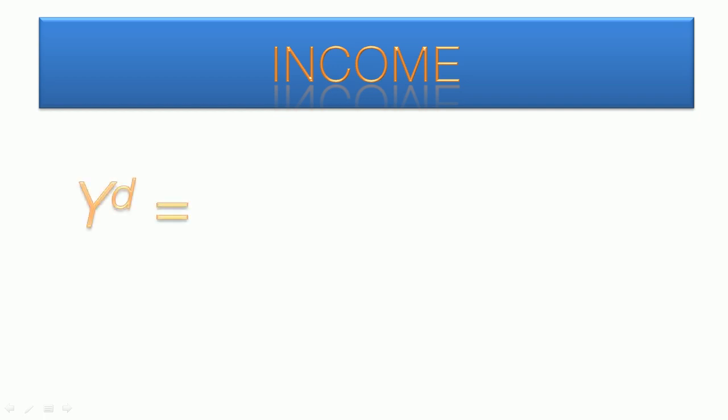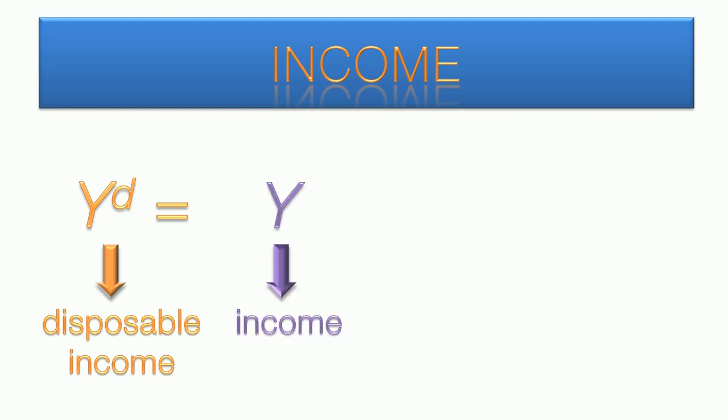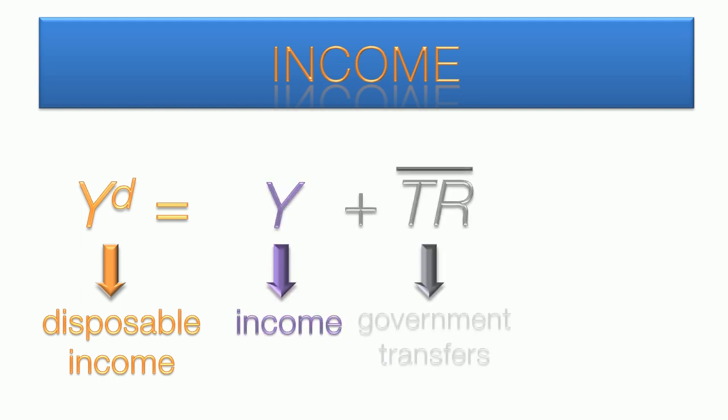Now we're going to take a closer look at disposable income. This is an aggregate measure of all the income paid to households plus government transfers such as welfare and social security, minus income taxes. As it's presented here, government transfers and taxes do not change relative to our dependent variable income. Again, this is shown by the horizontal bar above the two exogenous variables.